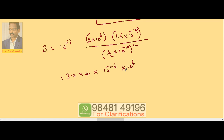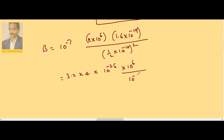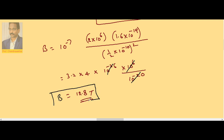We have 10⁶ divided by 10⁻²⁰, so taking 10⁻²⁰ to the numerator these terms combine. This gives 4 × 3.2 = 12.8 Tesla. The magnetic induction due to the revolving electron in the first orbit is B = 12.8 Tesla.